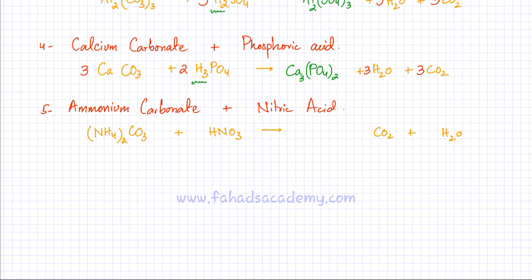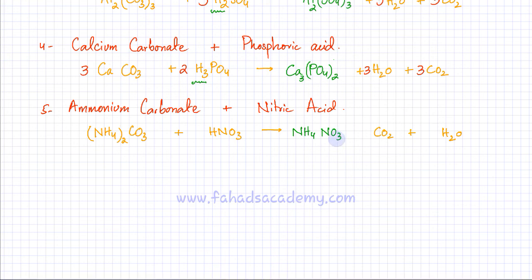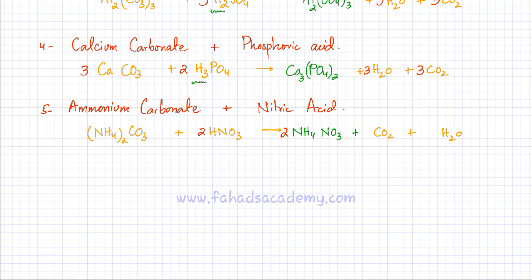Now you have ammonium as the positive ion. Get rid of H from HNO₃, and you have ammonium and nitrate. Ammonium is +1 and nitrate is −1, so the formula is ammonium nitrate, NH₄NO₃. Balance the equation: there are two ammoniums, so there should be two molecules of ammonium nitrate and two molecules of nitric acid. Everything is balanced. This is the reaction where ammonium carbonate reacts with nitric acid producing ammonium nitrate, carbon dioxide, and water.